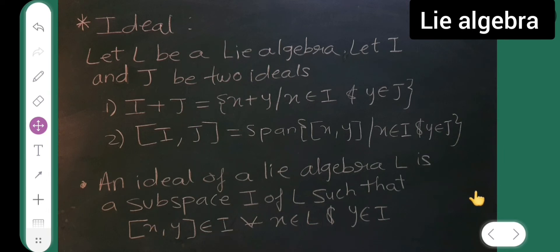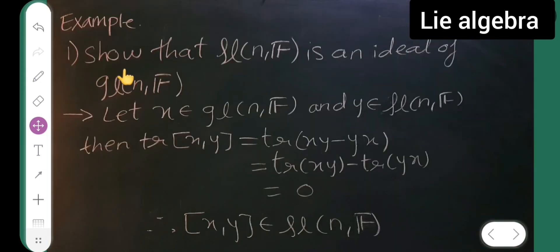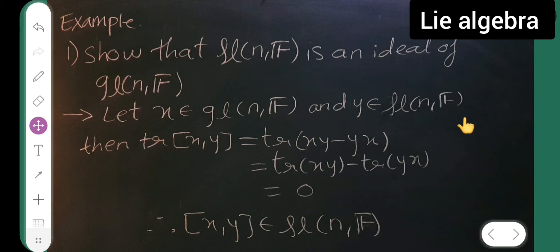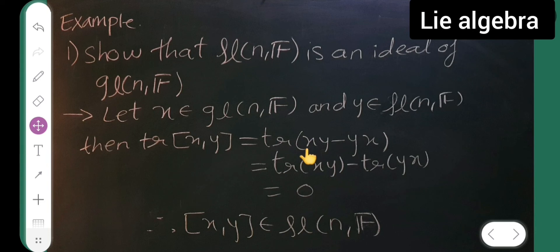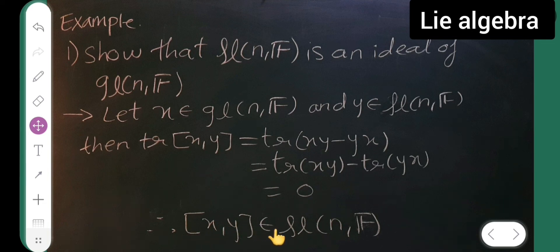Now I will prove one example: show that sl(n, F) is an ideal of gl(n, F). Let x belong to gl(n, F) and y belong to sl(n, F). Then the Lie bracket of x comma y equals xy minus yx, and the trace of xy minus yx equals trace of xy minus trace of yx, which equals zero. Therefore the Lie bracket of x comma y belongs to sl(n, F).